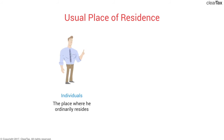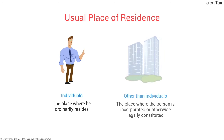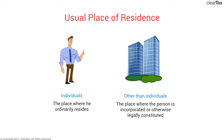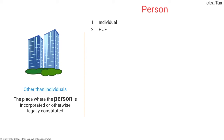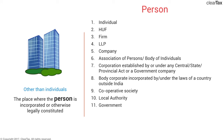The last definition we should know is the usual place of residence. For an individual person, it would very logically be the place where he ordinarily resides — for example, if you have a home in Bangalore and stay there with your family, that's your usual place of residence. For a taxable person other than an individual, the place would be where the person is incorporated or otherwise legally constituted. Suppose a company has obtained incorporation in Bangalore, then the usual place of residence for such a company would be Bangalore.